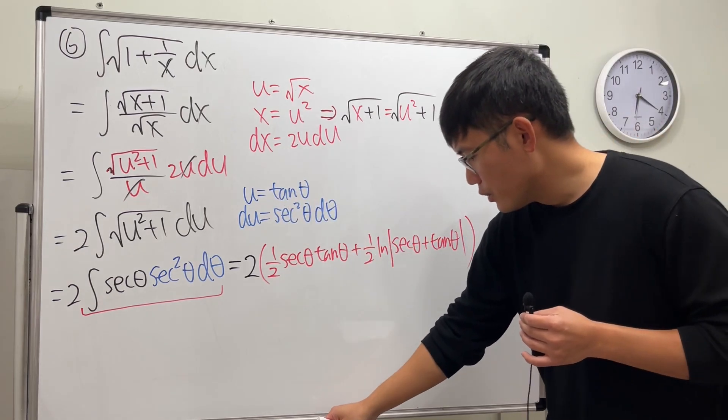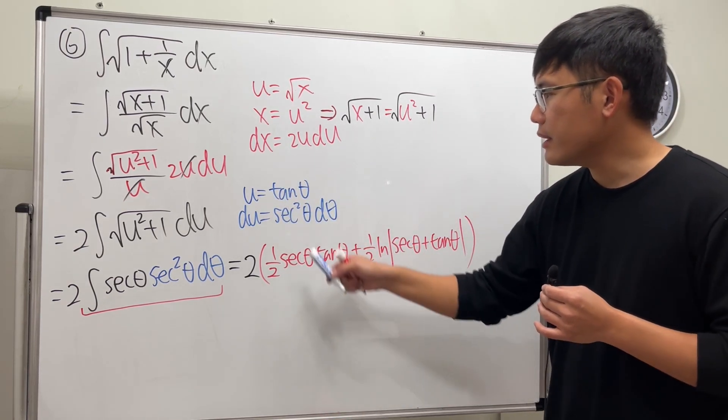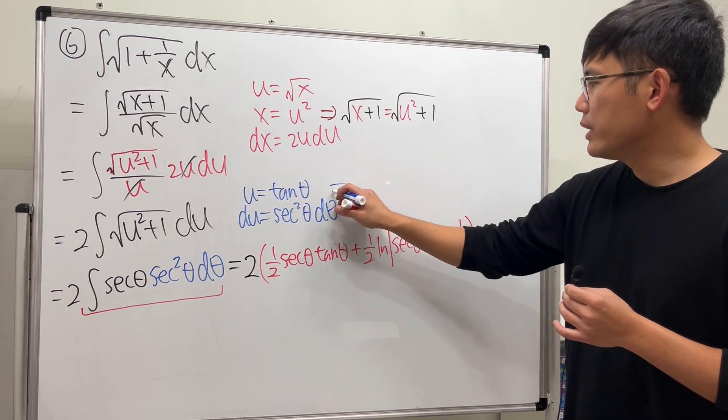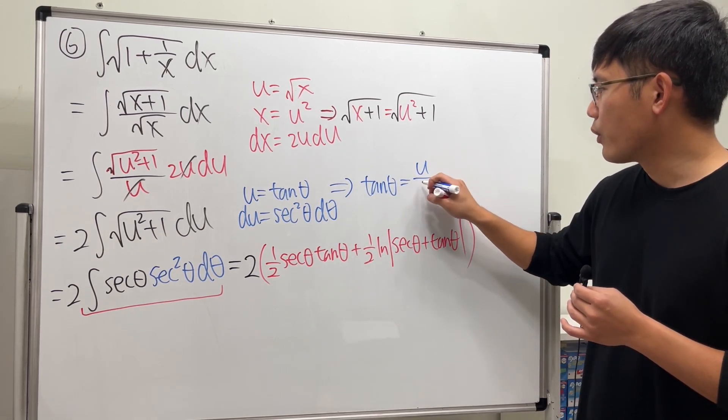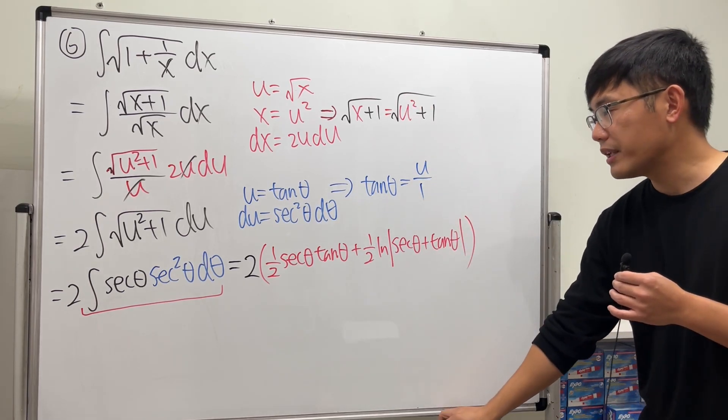We know that tangent theta is equal to u. So we can say tangent theta equals u over 1. Better yet, u is square root of x. So right here, I'm just going to change the u to square root of x.